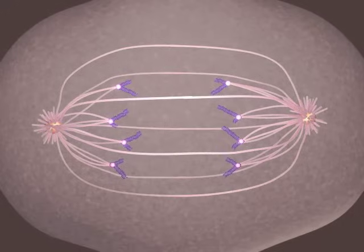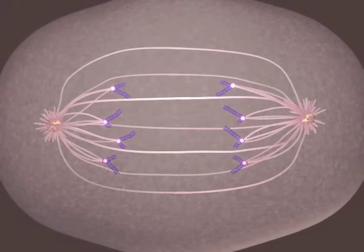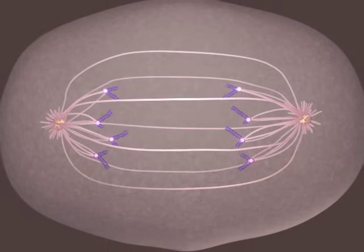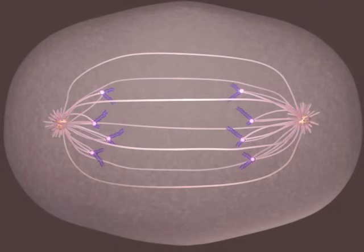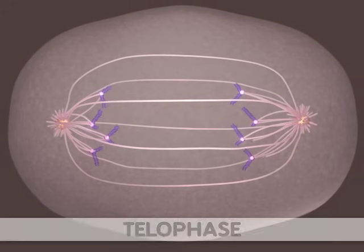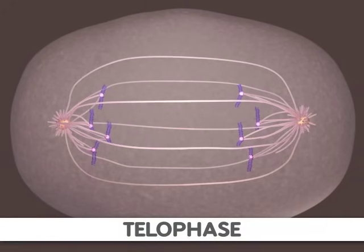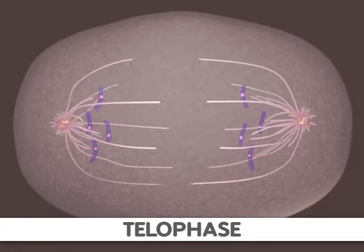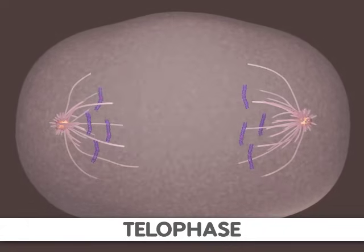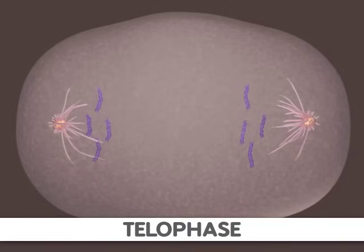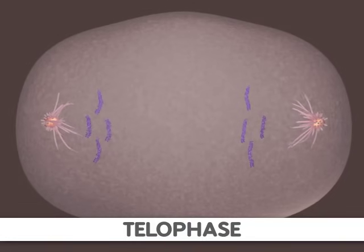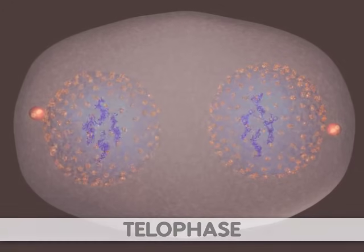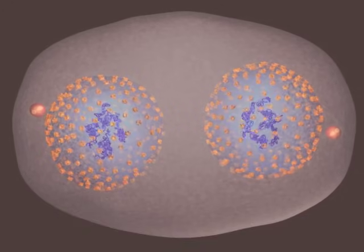Telophase is the final stage of mitosis. It is here the components of the new cells begin to appear. At this point, the spindle fibers are broken up. A new nuclear membrane surrounds the chromosomes at the end of each cell, and the chromosomes uncoil and return to an uncondensed state. Mitosis is now complete.